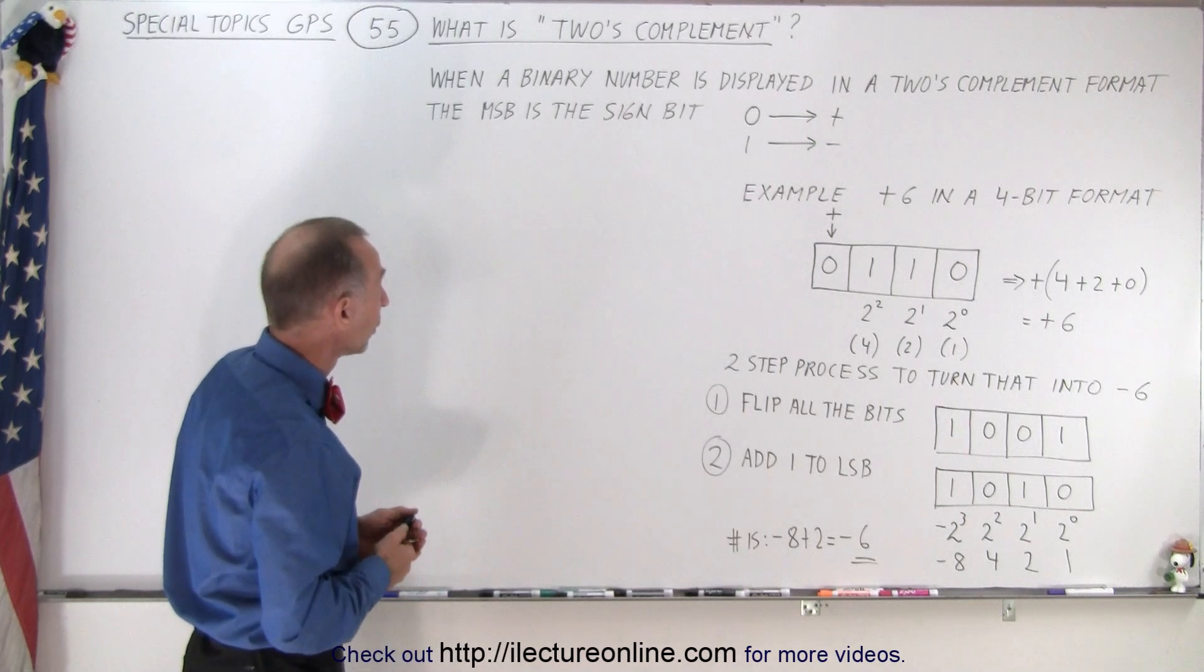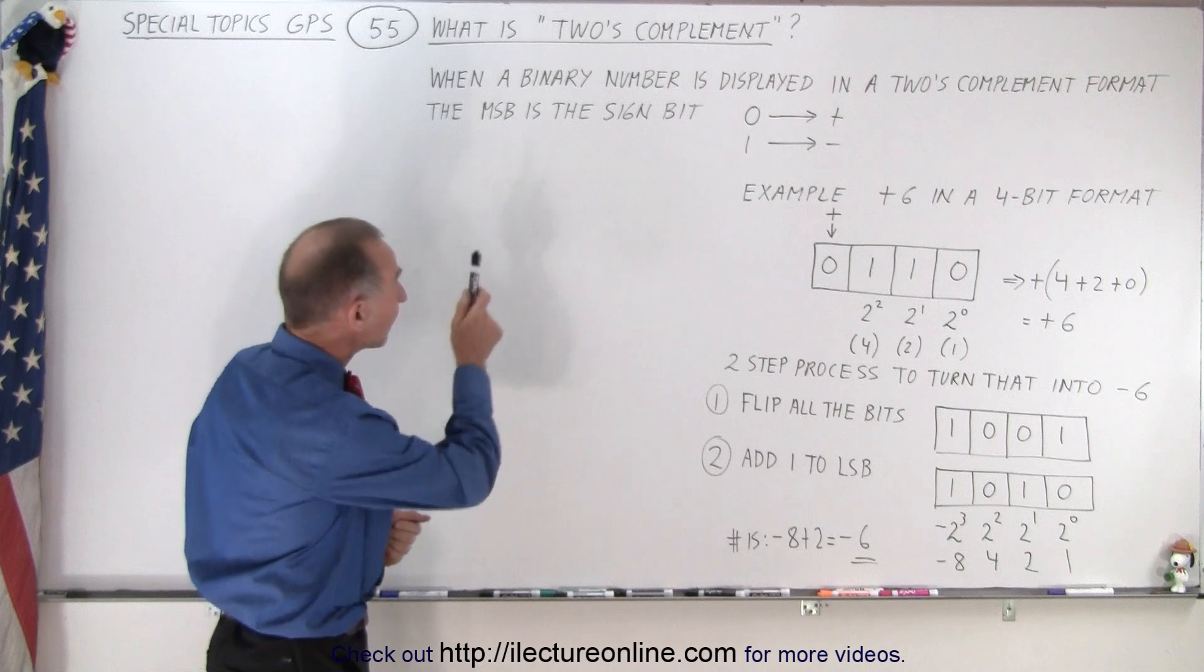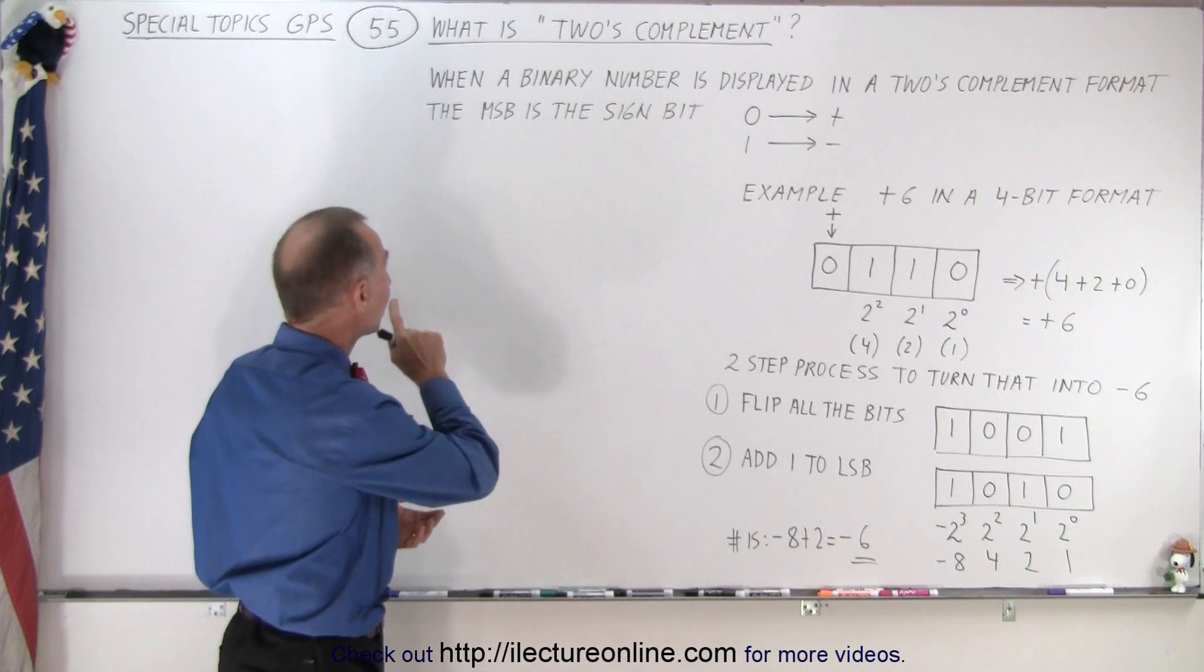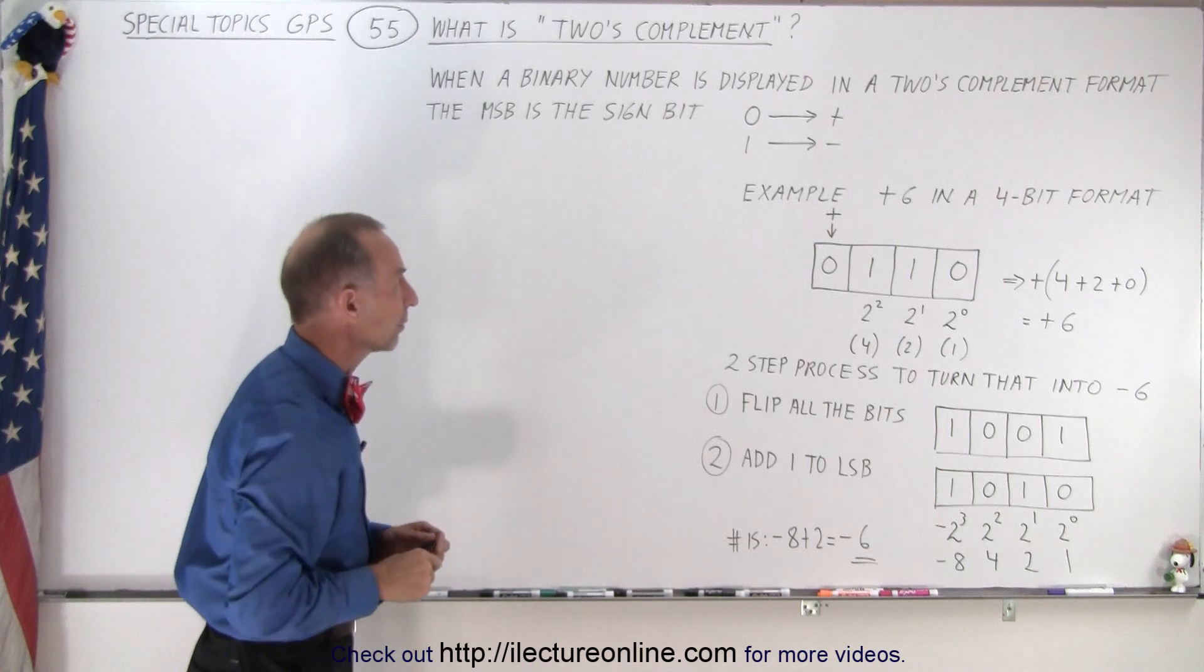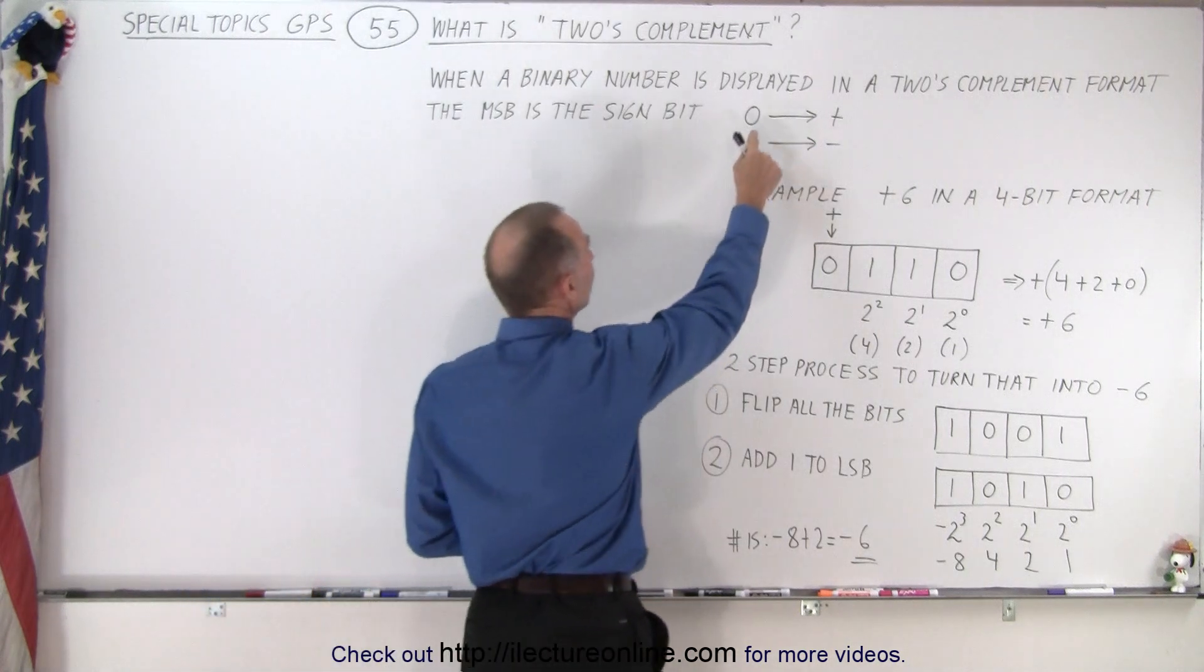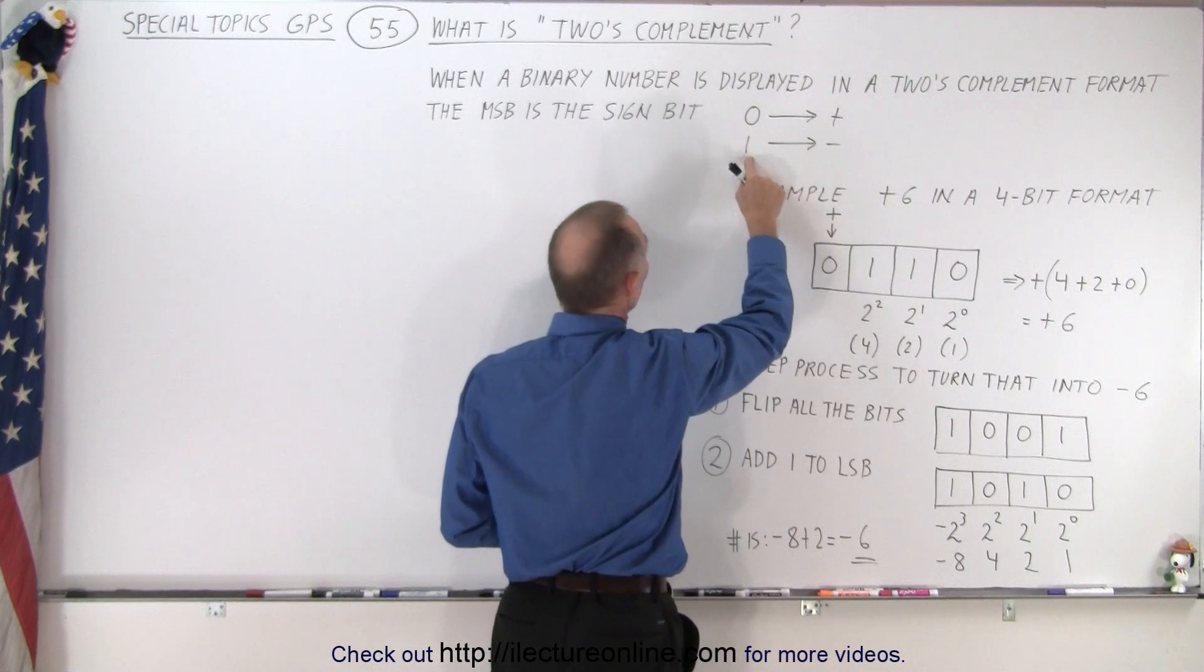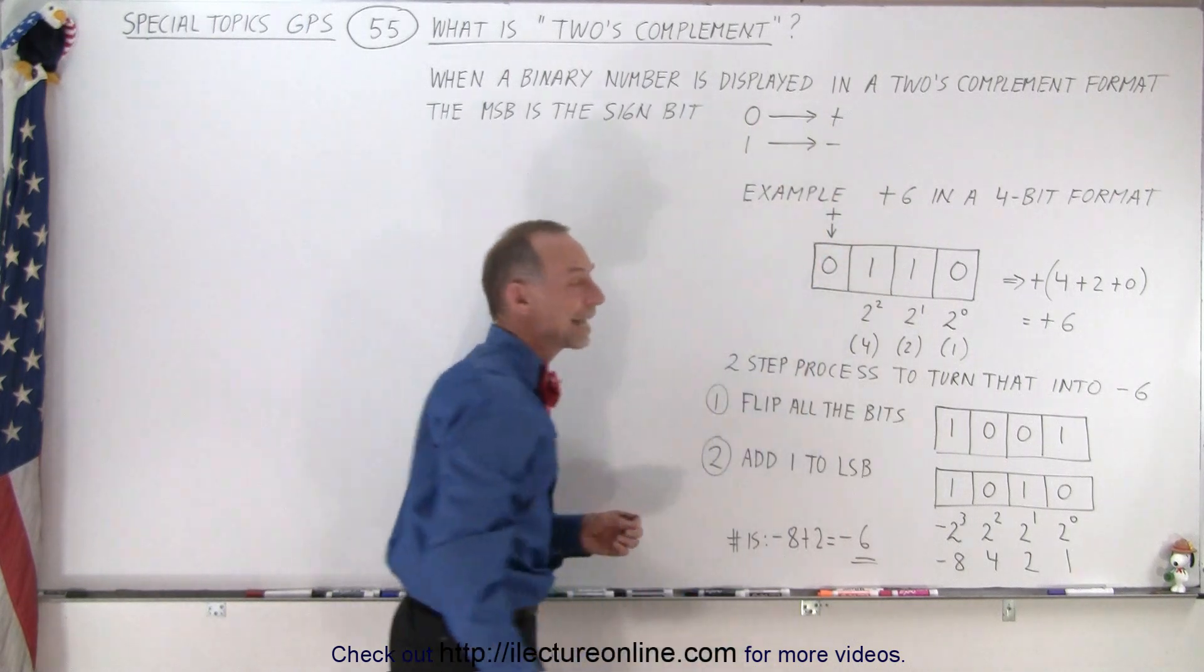So what is 2's complement? Well, it turns out when a binary number is displayed in 2's complement format, the MSB is the sign bit. So when the MSB is equal to 0, the number is a plus. When the MSB is equal to a 1, then the number is a negative number.